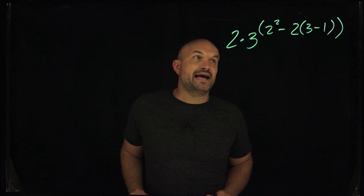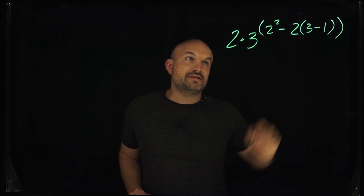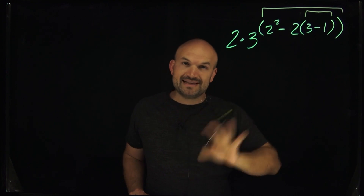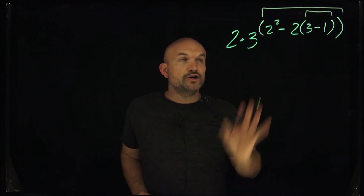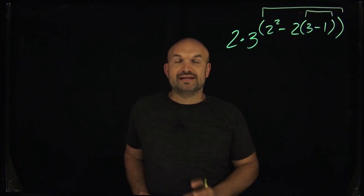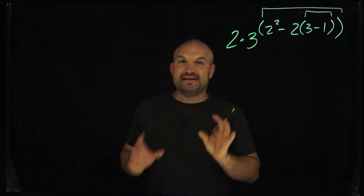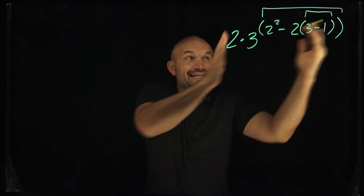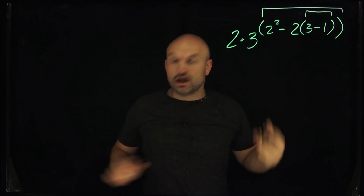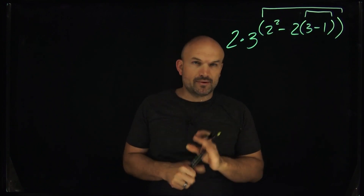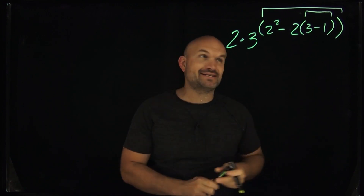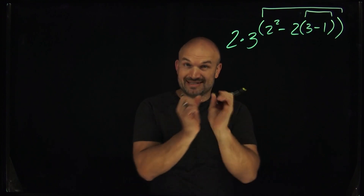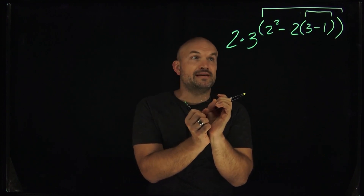We have two sets of parentheses — an outer set and an inner set. When following the order of operations, find the innermost parentheses first. You can see that three minus one is inside that larger set of parentheses, so we're going to simplify three minus one first, which gives us two.